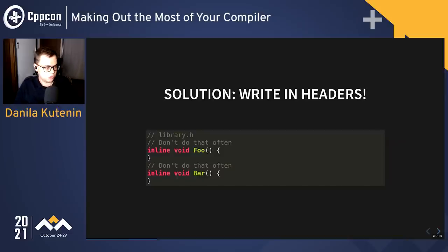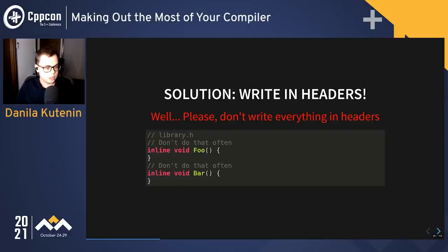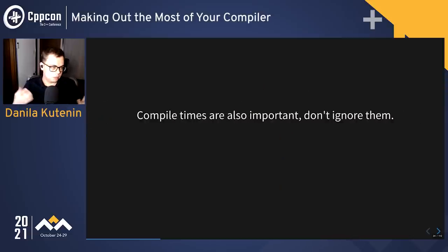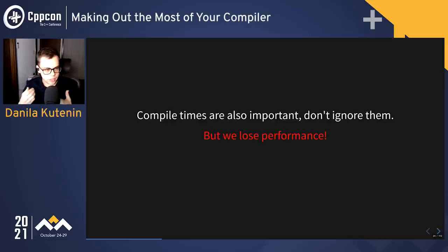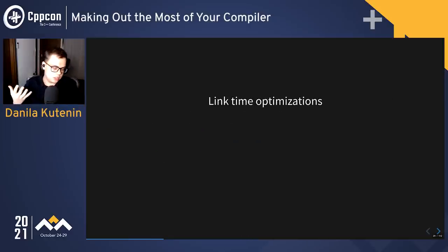To increase visibility to the compiler, you can write implementations into headers using the inline keyword, or for templated functions which are inline by default. But please don't do that very often — it really, really increases compile times. If you include headers multiple times, the function gets duplicated in each source file and compile times become significantly bigger. Compile times are important as well as performance. So how should we balance this? If we don't write in headers, we lose performance — that actually happens in practice. Productivity is important too. The middle ground is link time optimizations.